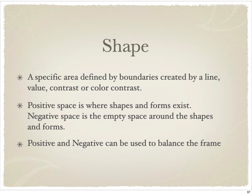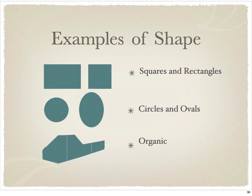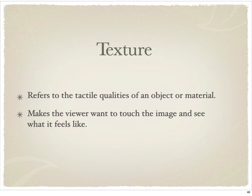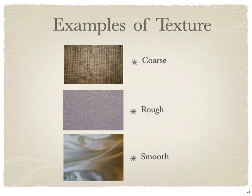Shape is a specific area defined by a boundary created by a line, value, contrast, or color contrast. This is probably one of the easiest elements to find out in nature — there are shapes pretty much everywhere. We have squares and rectangles, circles and ovals, and also organic shapes and triangles. Shapes can be really rigid or more relaxed, like a flower petal. Texture is another favorite element to integrate into design. Finding texture in the real world is easy — you could take photos of wood, sand, or any of those things. Texture can really warm up an image and make it feel real. Examples include coarse, rough, or smooth textures.